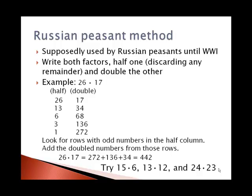For example, 26 times 17: I write 26 and 17. I take half of 26 and get 13; I double 17 to get 34. Then I take half of 13, I get 6 remainder 1, I ignore the remainder and just write 6. I double the 34 to get 68. Take half of 6 to get 3, and double 68 to get 136. When we take half of 3 we get 1 and a half; we discard the half and get 1, and then 136 doubled is 272.